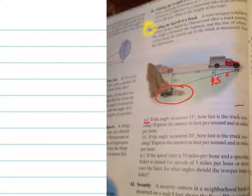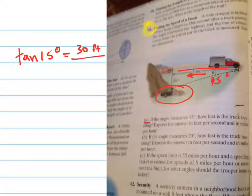This is a simple trig problem. Opposite over adjacent is the tangent. So the tangent of 15 degrees equals 30 feet over, well in one second, this is going to equal x feet. So let's find out what that is first.